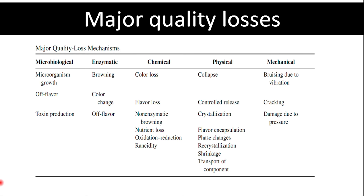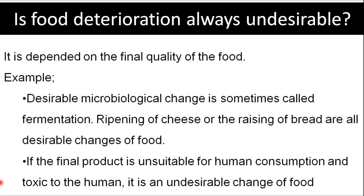Here you can see the major quality losses during food deterioration and spoilage. For example, microbial spoilage can cause development of off-flavors and toxin production, while enzymatic spoilage can cause browning and color changes. You may think that food deterioration is always undesirable, but it depends on the final quality of the food. Desirable microbiological changes, sometimes called fermentation — such as ripening of cheese or the raising of bread — are all desirable changes due to microorganisms. If the final product is unsuitable for human consumption and toxic to humans, it is an undesirable change.